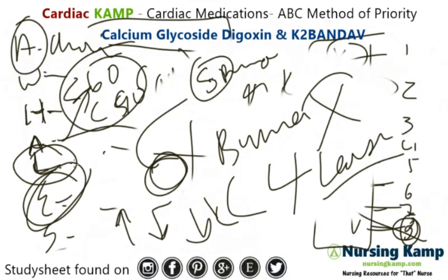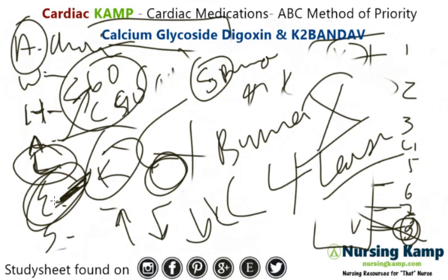Maybe if they're on Lasix and digoxin, potassium might be an issue. And if they start to get anorexic — they don't want to eat — that's a problem.